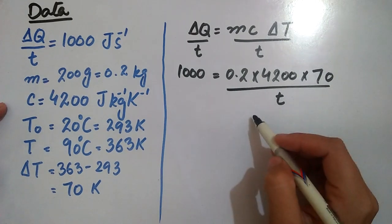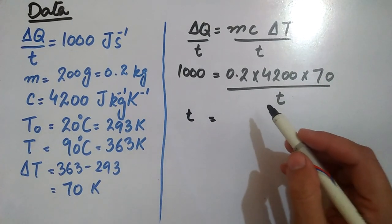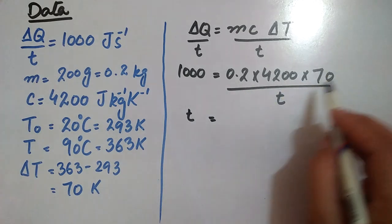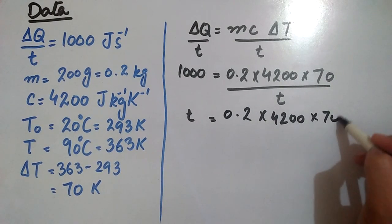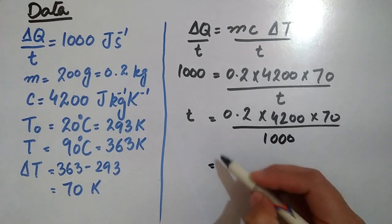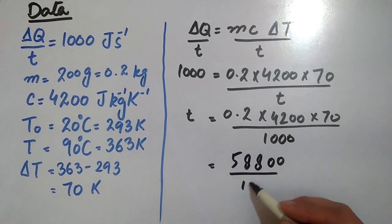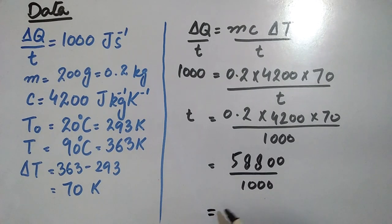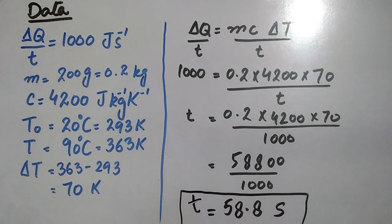अब cross multiply करेंगे, t यहाँ चला जाएगा, 1000 यहाँ जाएगा। तो t will be equal to: 0.2 × 4200 × 70 divided by 1000। ऊपर वाली side multiply करेंगे तो answer आएगा 58800 divided by 1000। Divide करेंगे तो answer आता है 58.8 seconds। तो उसे कितना time लगेगा — 58.8 seconds, मतलब approximate एक minute।